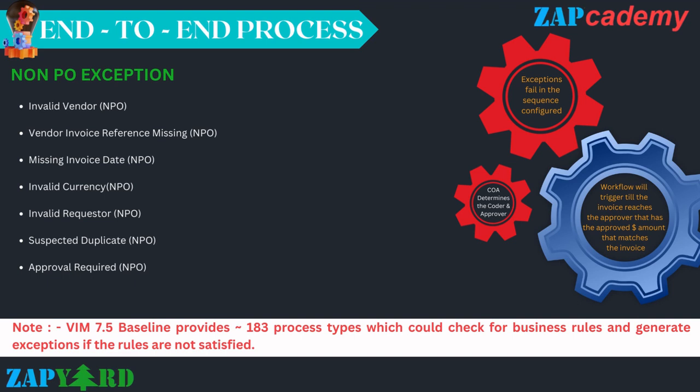Some key non-PO exceptions that get raised include invalid vendor, invalid currency, invalid requester, and approval required. Note that WIM 7.5, based on configuration, provides around 183 process types which check for business rules and generate exceptions if those rules are not satisfied. The chart of authority helps determine the coder and approver to resolve the approval-required exception. The workflow triggers until the invoice reaches an approver with an approved dollar amount matching the invoice, as configured in the chart of authority.